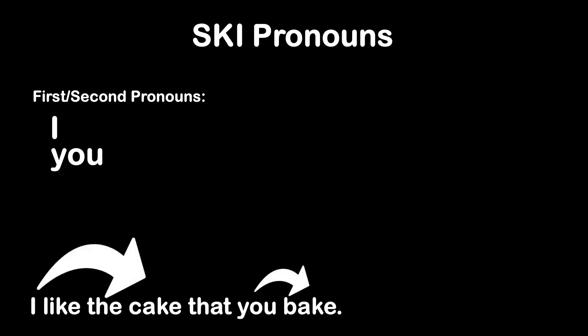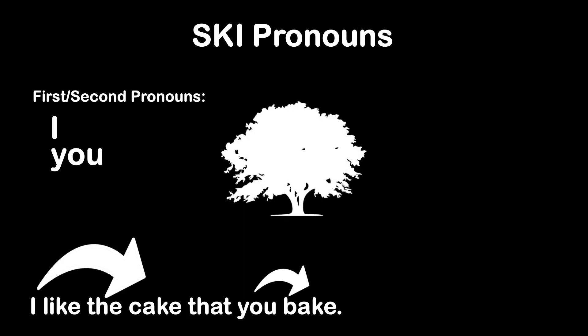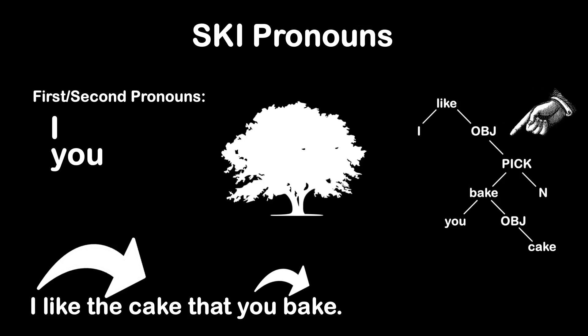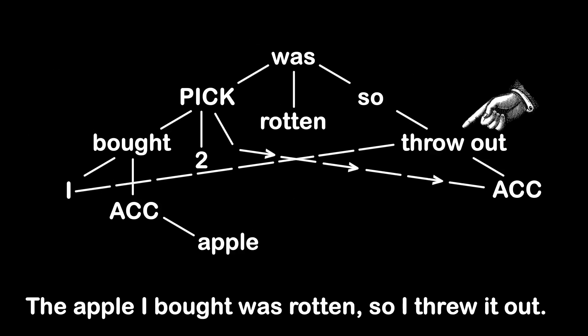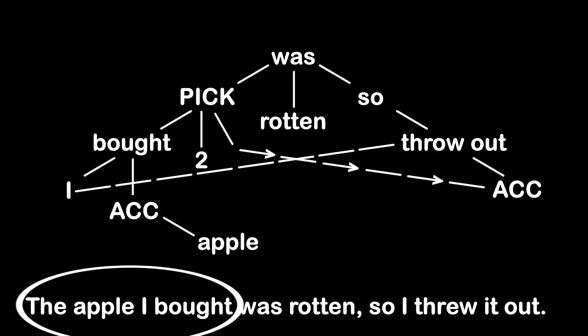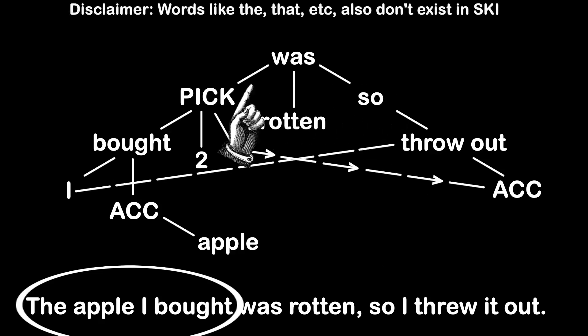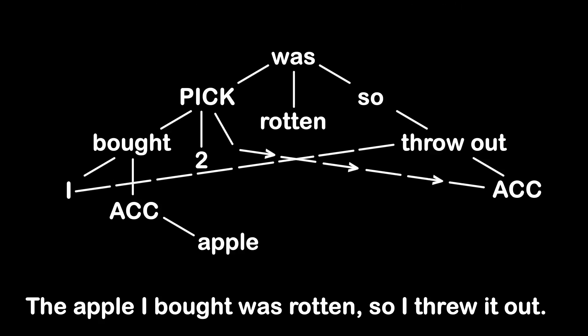There's also two non-single-argument grammatical words. One is the copula, which has some kinda complicated behavior. The other is the pick function, which takes a relative clause and a number N, and it essentially rips the Nth input to that verb to be the word it describes. These seven functions are part of the basic grammar lexical set. Now we need to talk about pronouns. In SKI, other than the first and second person pronouns I and you, you can only use a pronoun to refer to something in the same sentence. This is done by having the computation graph reuse an intermediate node in multiple places.